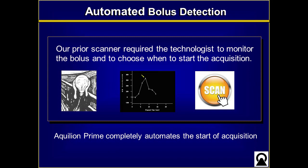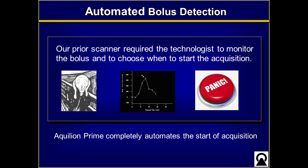Our prior scanner required the technologist to monitor the bolus and choose when to start the acquisition. The technologist needed to monitor the signal over time and make a split-second decision when the signal peaked, then hit the scan button — which frequently looked a lot like a panic button because they needed to get it right away to get the timing just right. As a result, on our old scanner we hardly ever used automated bolus detection.